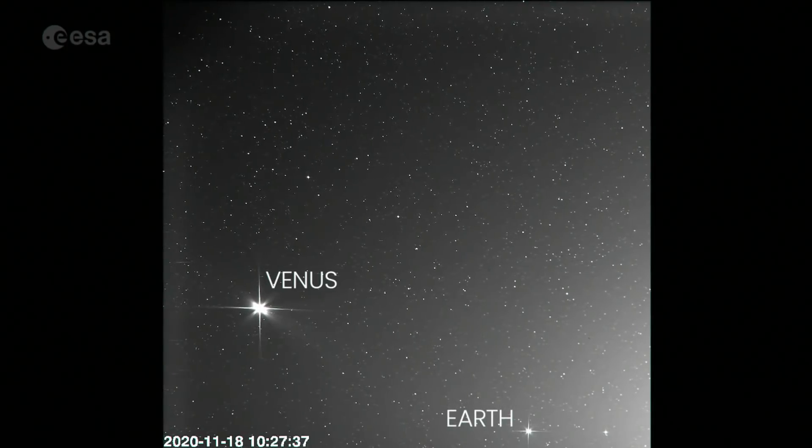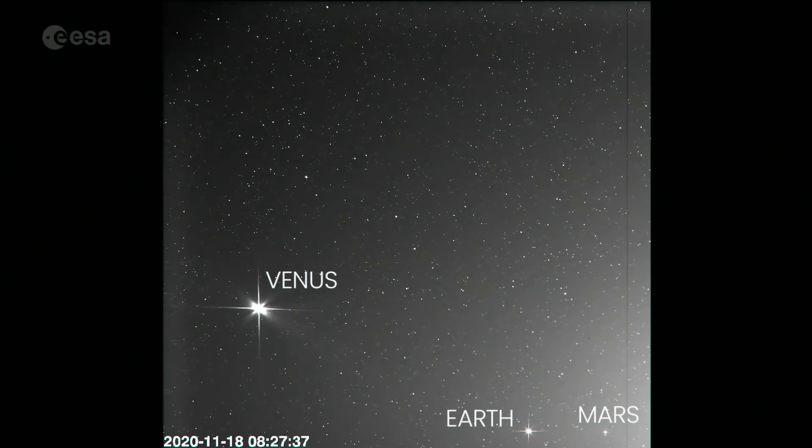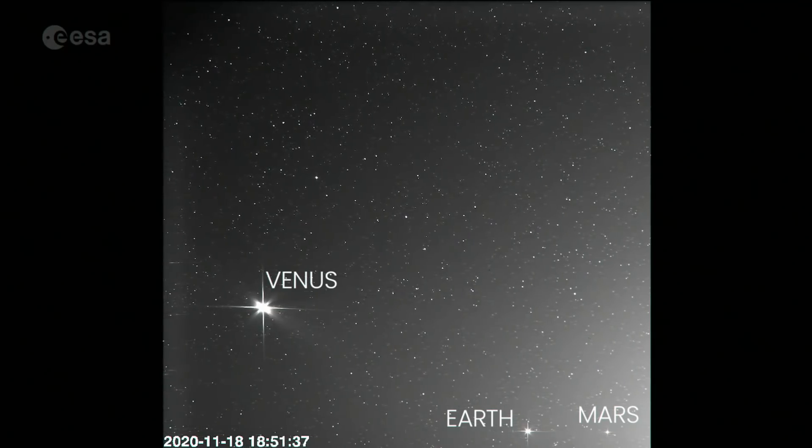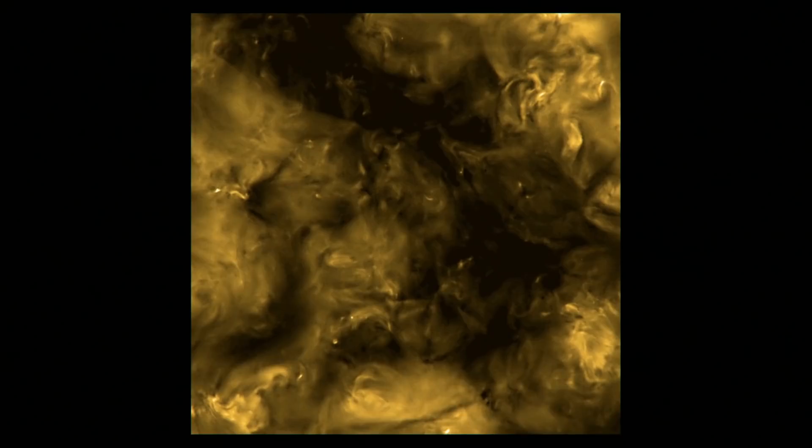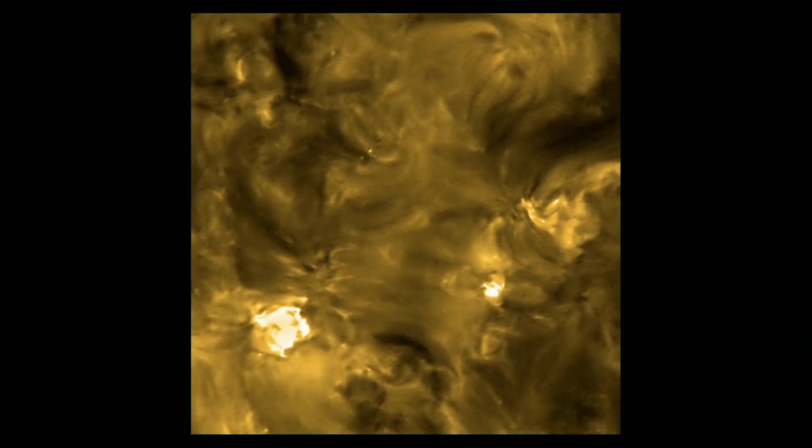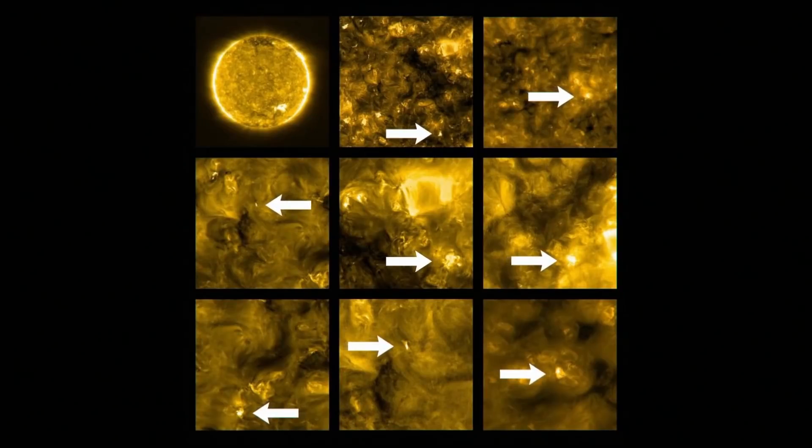On November 18, 2020, the heliospheric imager camera onboard the spacecraft grabbed images of Venus, Earth, and Mars. New images of the Sun taken just 48 million miles from its surface are the closest images ever captured by cameras, and they revealed something never seen before: mini flares all over the Sun, a millionth the size of a regular solar flare called campfires.